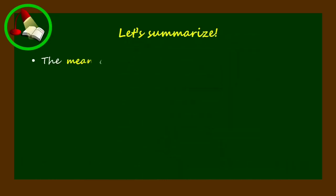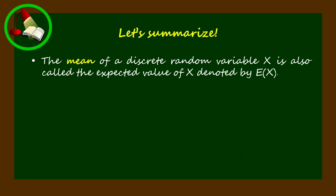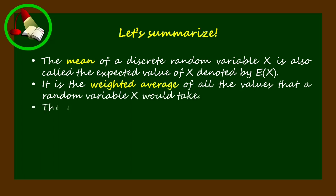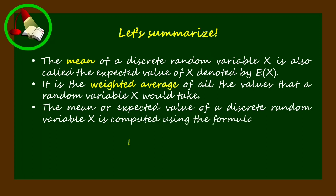Let's summarize. The mean of a discrete random variable x is also called the expected value of x, denoted by E(x). It is the weighted average of all the values that a random variable x would take. The mean or expected value of a discrete random variable x is computed using the formula: E equals the summation of x times P(x).